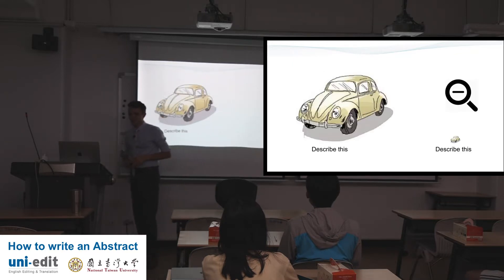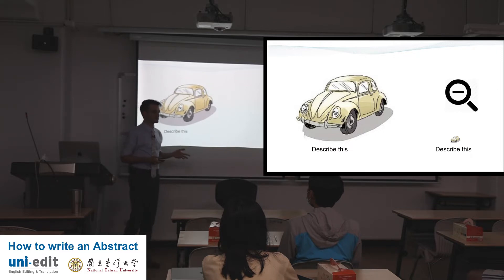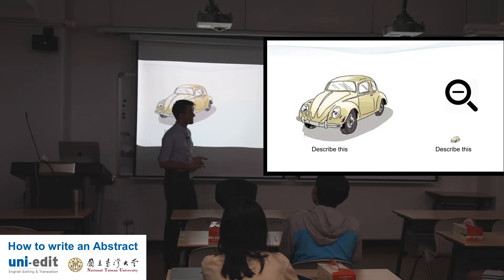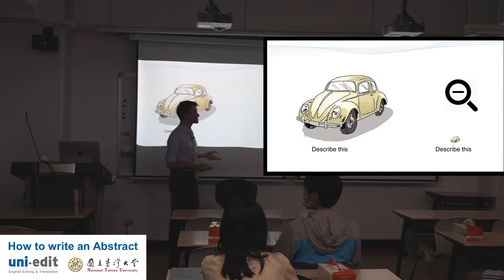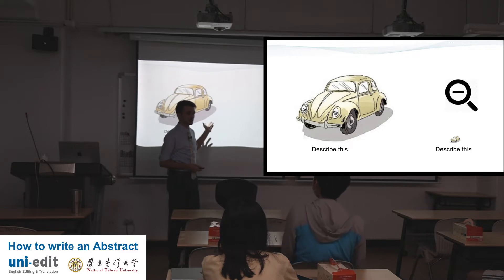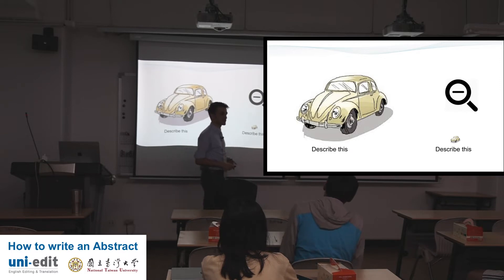To start, if I asked you to describe this car, it's pretty easy. You can tell me about the color, the materials, the tires, the age of the car, when it was made, maybe what materials were used to paint it. It's easy because it's really big. But if I asked you to describe this car, it would be a lot more difficult.